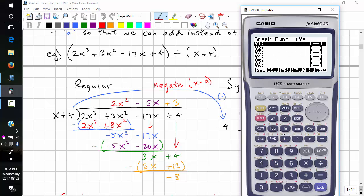And don't forget, you need brackets around your numerator and brackets around your denominator. 2x raised to the power 3 plus 3x squared minus 17x plus 4, divided by brackets, x plus 4.